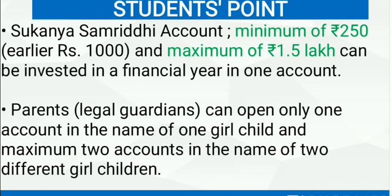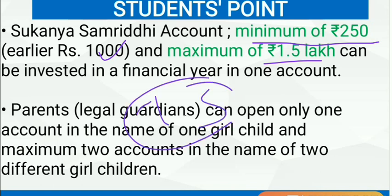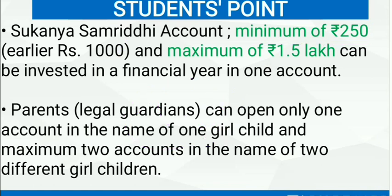Under Sukanya Samridhi Yojana there is a provision for a minimum deposit of Rs. 250 — earlier it was Rs. 1000 but has been reduced to Rs. 250 — and a maximum deposit of Rs. 1.5 lakh per year. Focus here: per year only Rs. 1.5 lakh can be deposited. Parents or legal guardians can open only one account in the name of one girl child.